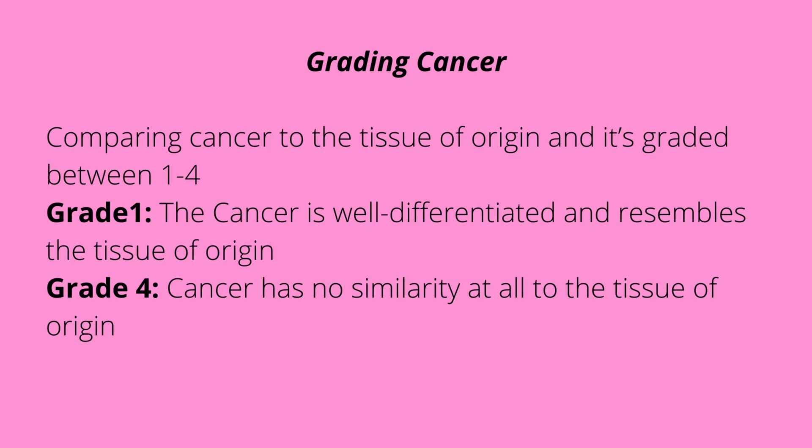Let's talk about grading and staging cancers. For grading, we compare the cancer to the tissue of origin and grade it between one and four. Grade one indicates the cancer is well differentiated and resembles the tissue of origin. Grade four means the cancer has no similarity at all to the tissue of origin — so grade four carries a worse prognosis compared to grade one.